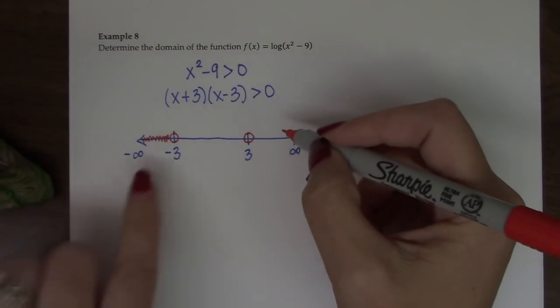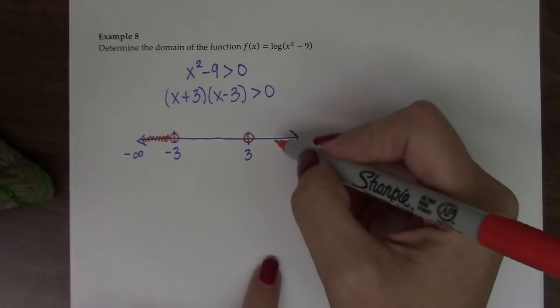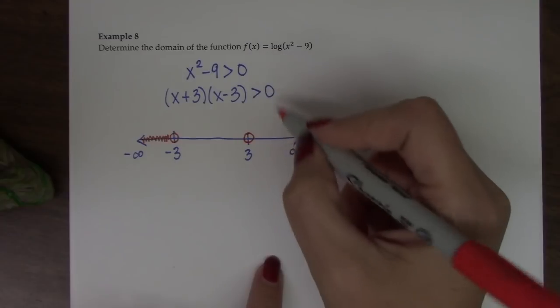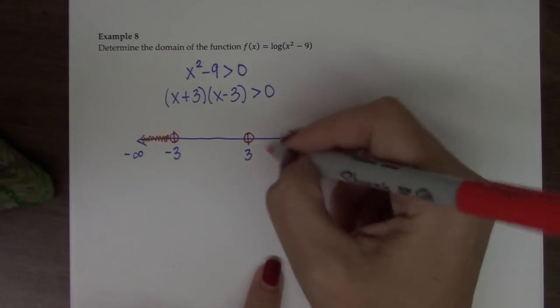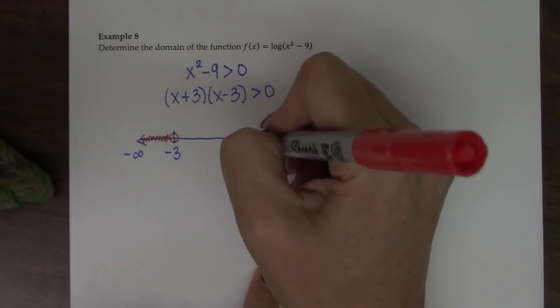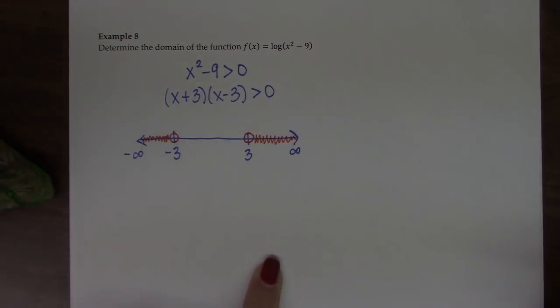But on this side, we're kind of in the same boat we were on this side. So 4, if you square it, it's 16. 5 is 25. No matter which value you pick on this side of the graph, when you square it, it's bigger than 9. So all these values come out as positive.